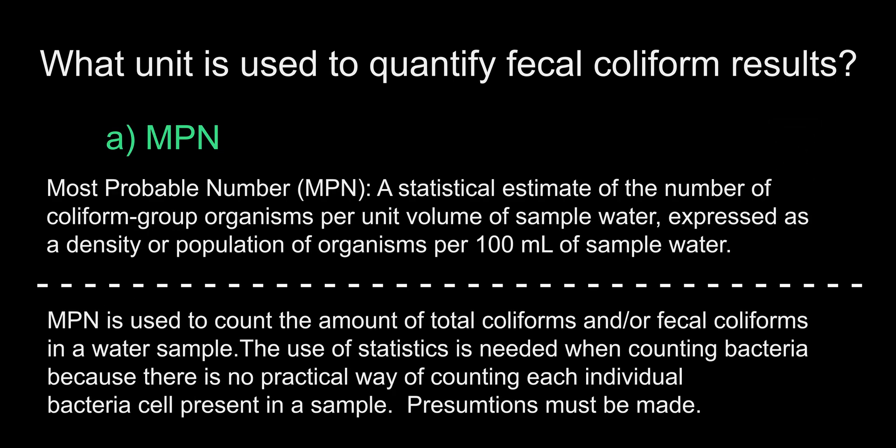The answer is A, MPN. Coliform bacteria are a broad group of microorganisms that are able to ferment lactose within 48 hours at 35 degrees Celsius. Coliform bacteria are found in the digestive tracts of humans and other warm-blooded animals. This group of bacteria is further classified into two major groups: non-fecal and fecal coliforms. Fecal coliforms are able to grow at higher temperatures, up to 45 degrees Celsius. This is a major distinction between the two groups.